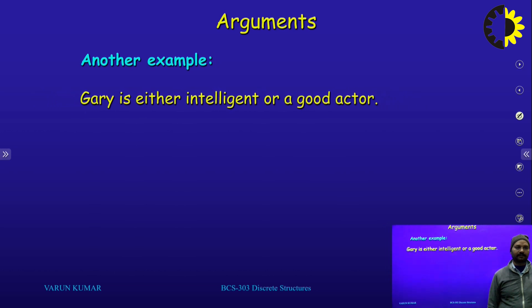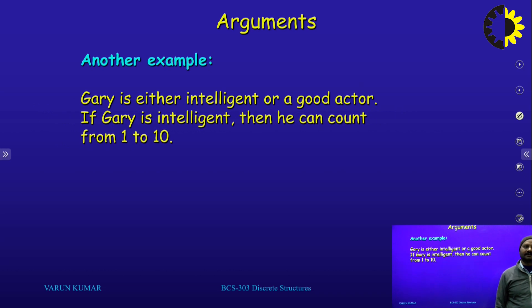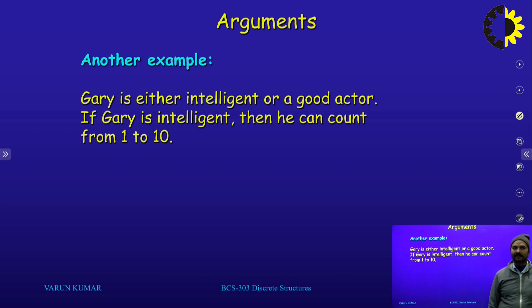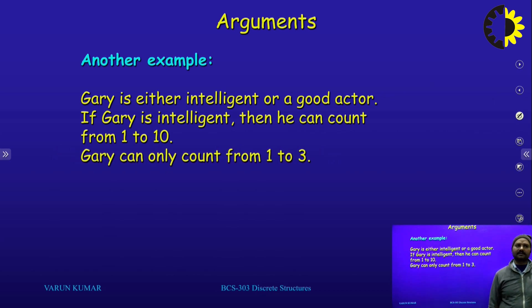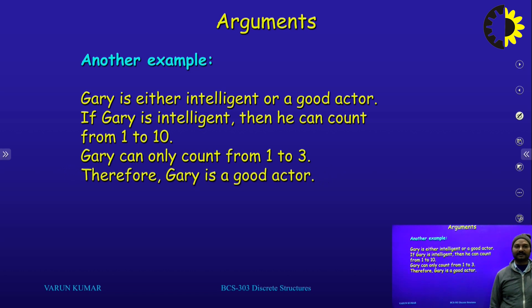Another example: 'Gary is either intelligent or a good actor.' Our second statement is 'if Gary is intelligent, then he can count 1 to 10.' My third statement is 'Gary can only count 1 to 3.' Therefore, the conclusion is 'Gary is a good actor.'